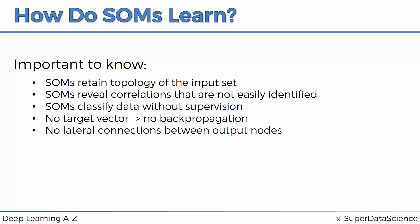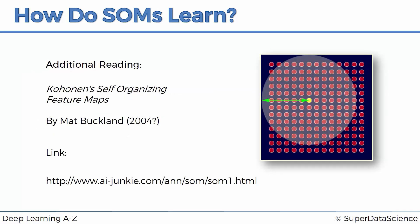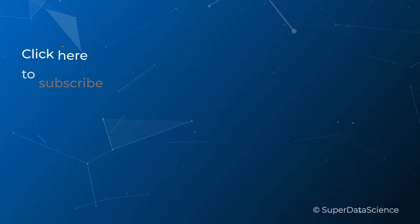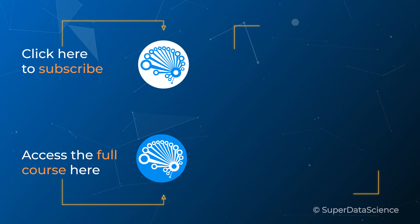So that's how self-organizing maps learn. If you'd like to study this further with a soft introduction to the mathematics — which is actually the simplest out of all the neural networks discussed in this course — covering how the radius changes and how weights are updated based on proximity to the best matching unit, a great resource is available at aijunkie.com. The post is called Kohonen's Self-Organizing Feature Maps by Matt Buckland, and it's a great gentle introduction. Make sure to check out the related videos or the full course in the description to continue your learning.